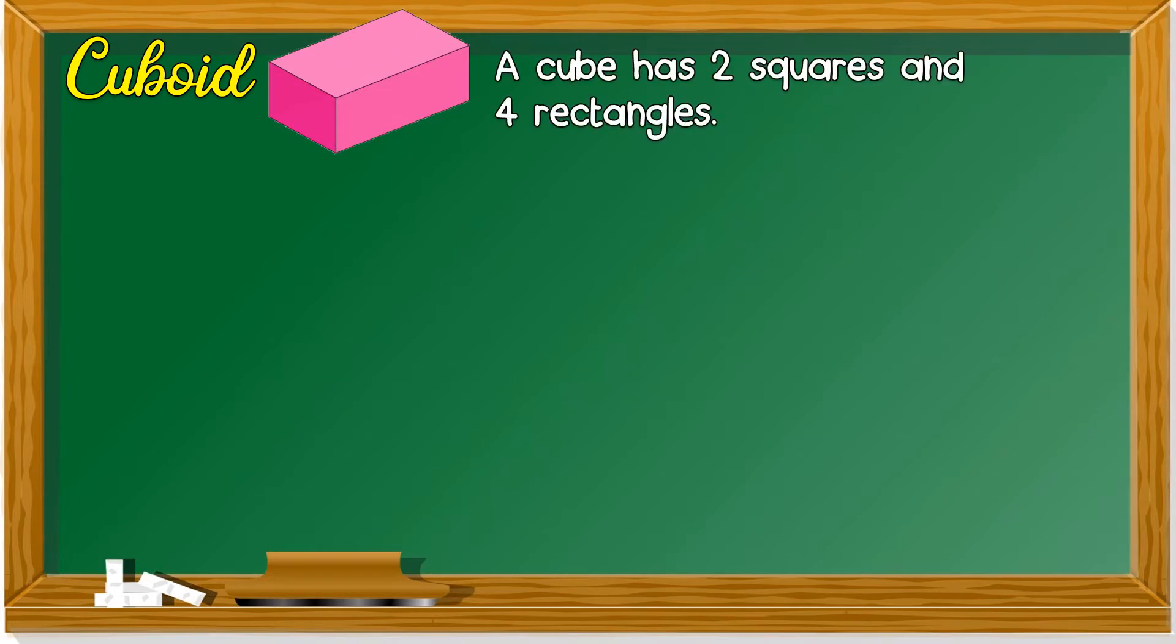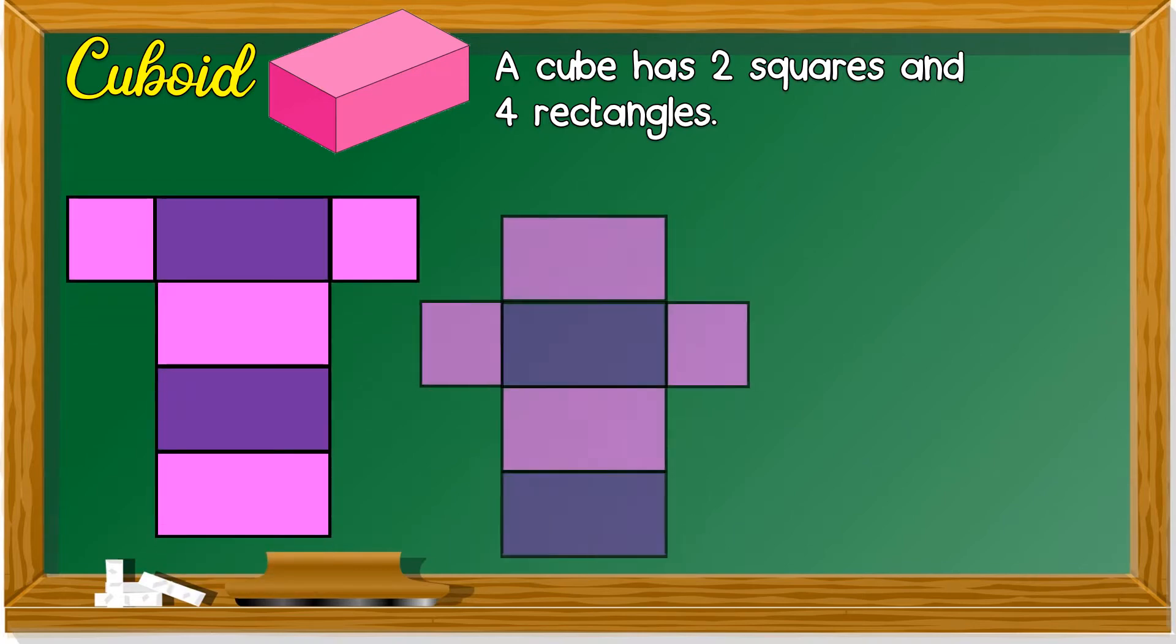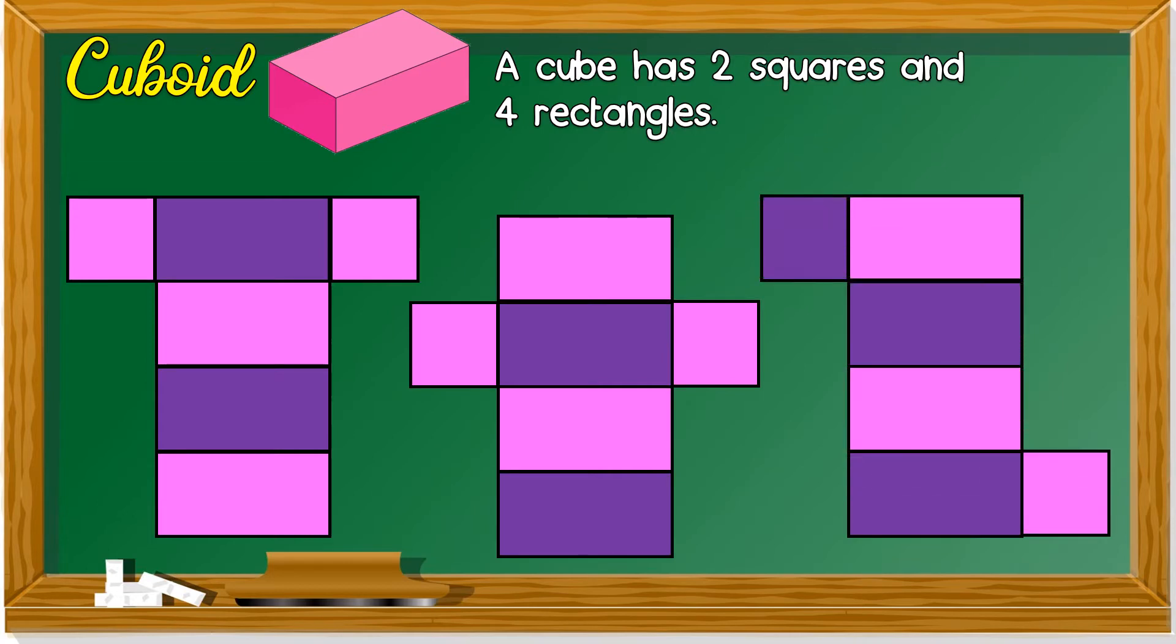Next, we have cuboid. Remember this? A cuboid has 2 squares and 4 rectangles. And the nets are like this. And how to fold a cuboid? Let me show you.